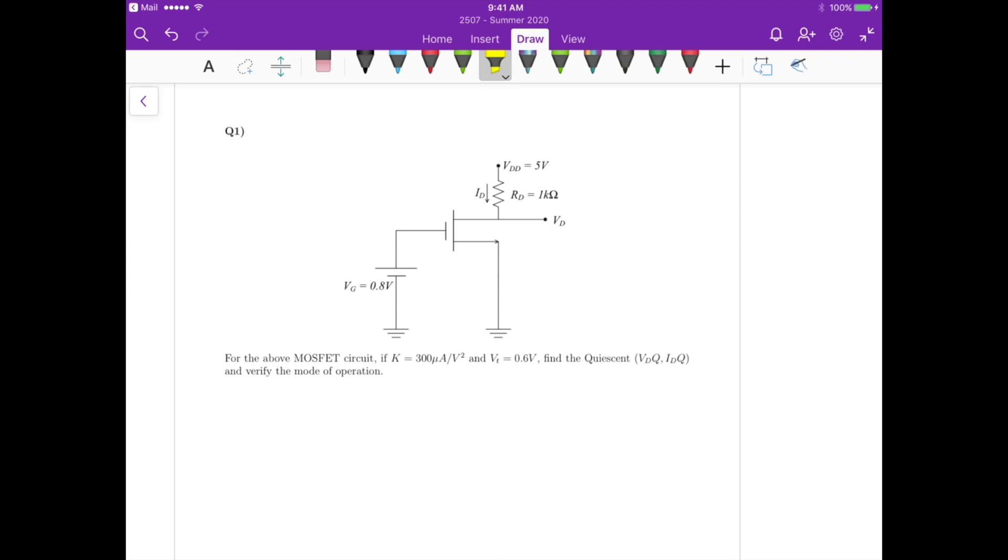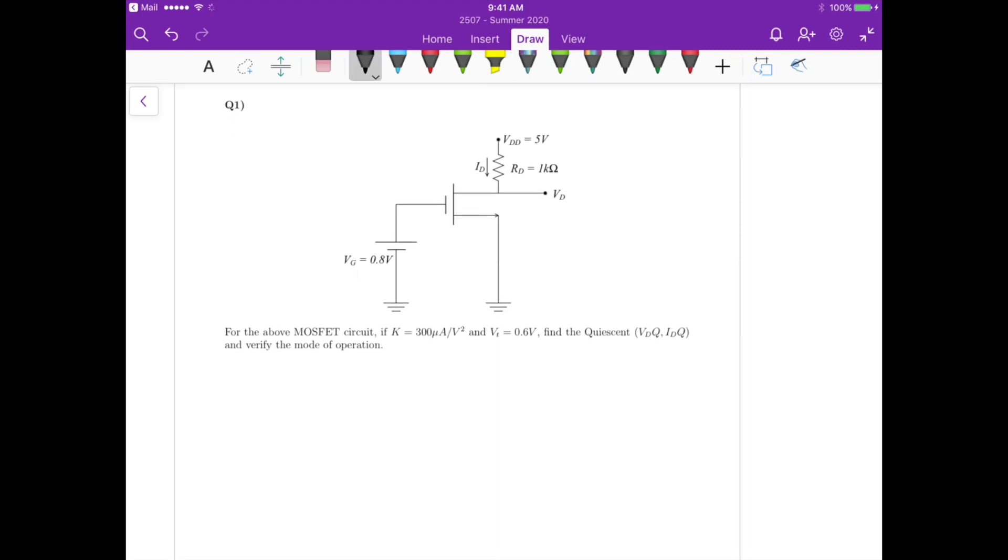So for this particular circuit, if we assume that the MOSFET is operating in the saturation region, we have an equation for the drain current that equals one half the transistor transconductance times Vgs minus Vt squared.